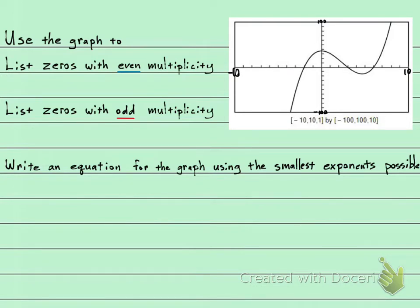And then each tick mark is worth 10 going up or down. And that makes sense because we have 10, 20, 30, 40, 50, 60, 70, 80, 90, and 100.